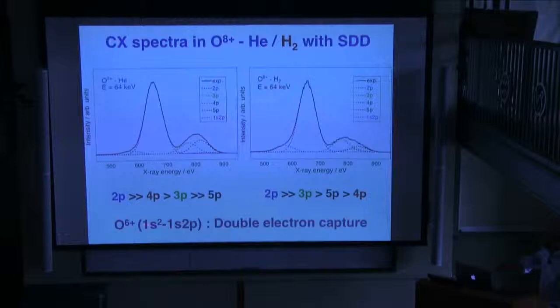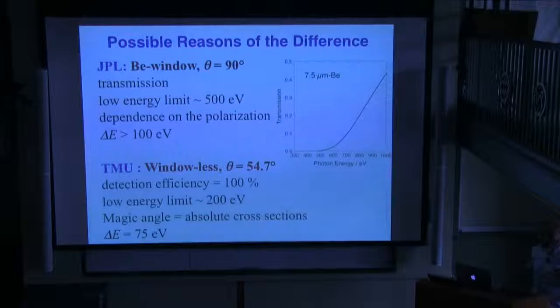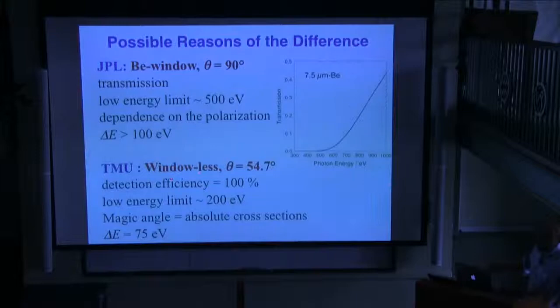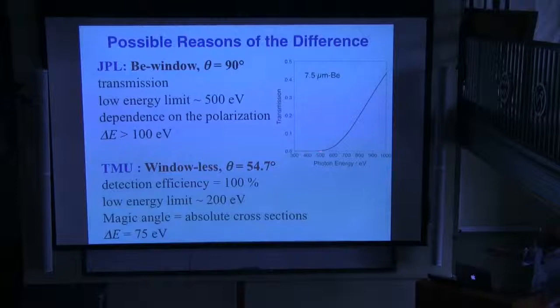Let me say a few words about the difference between the pioneer work by Greenwood and the Chutjian group, and our results. The big difference is that they use a beryllium window, but we have no window. Also, they measure in the perpendicular direction, but we use the magic angle — just two differences. You must consider the transmission: this is the transmission curve of a 7.5-micrometer beryllium window, which goes to zero at around 500 eV. So a beryllium window cannot be used for low-energy photons.